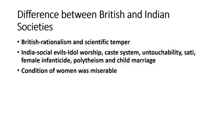Before discussing the major social religious reform movements originated in India during the first half of the 18th century, let us look at the difference between Indian society and British society. The British society, as a result of enlightenment and renaissance, adopted rationalism and scientific temper in their approach. What were the characteristic features of 18th century Indian society?